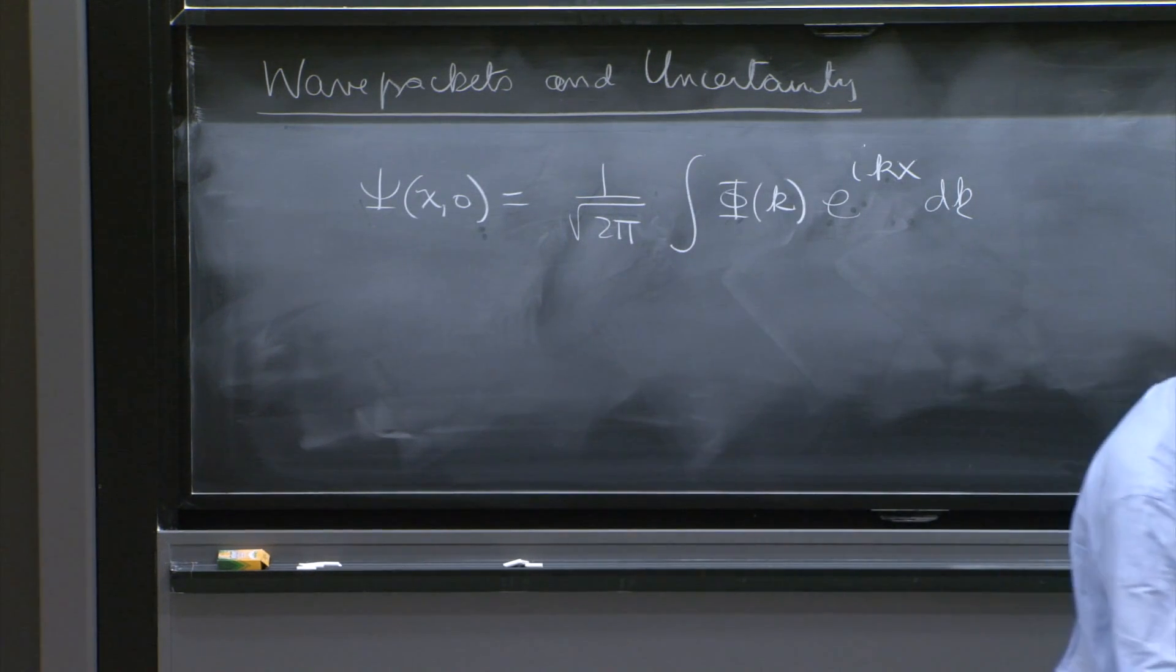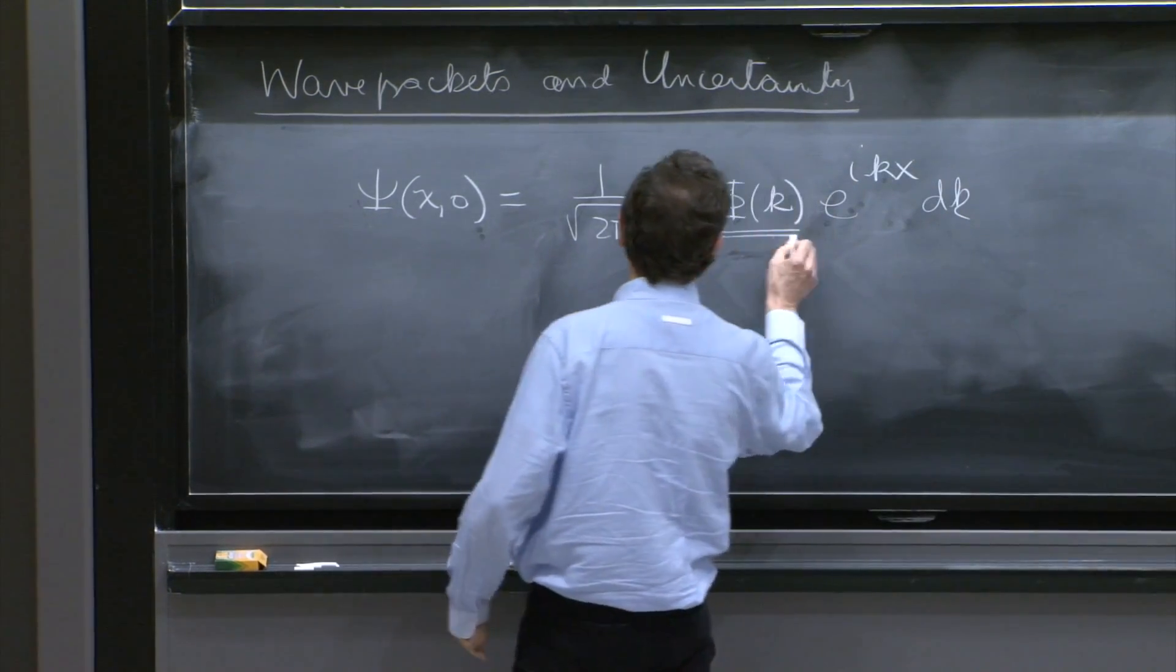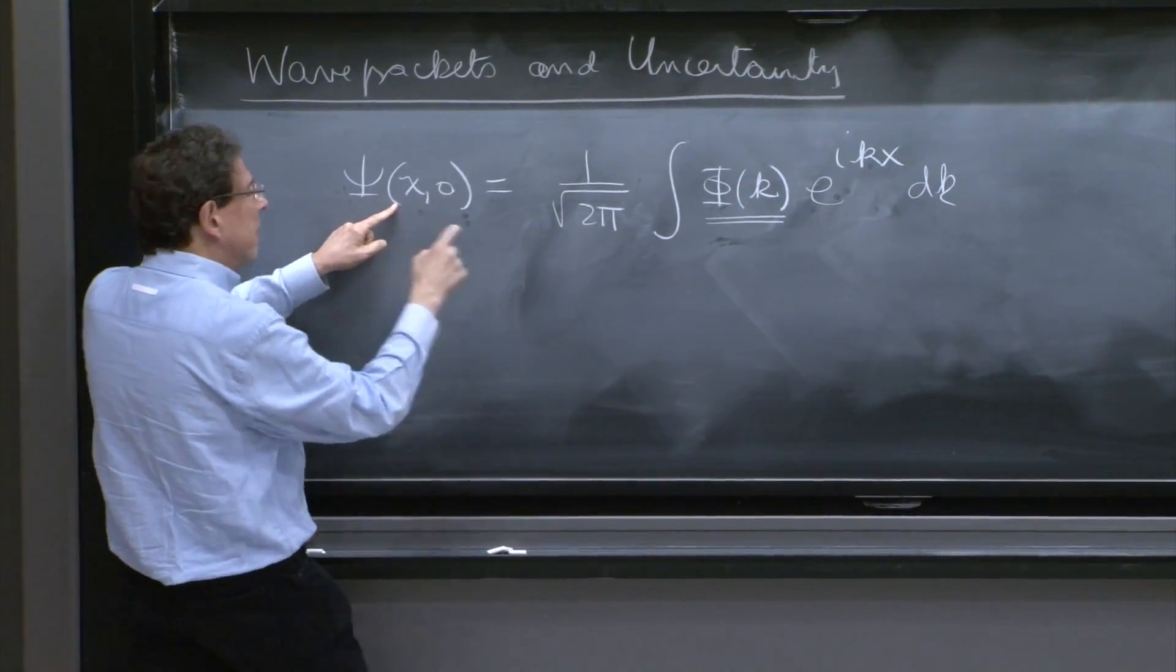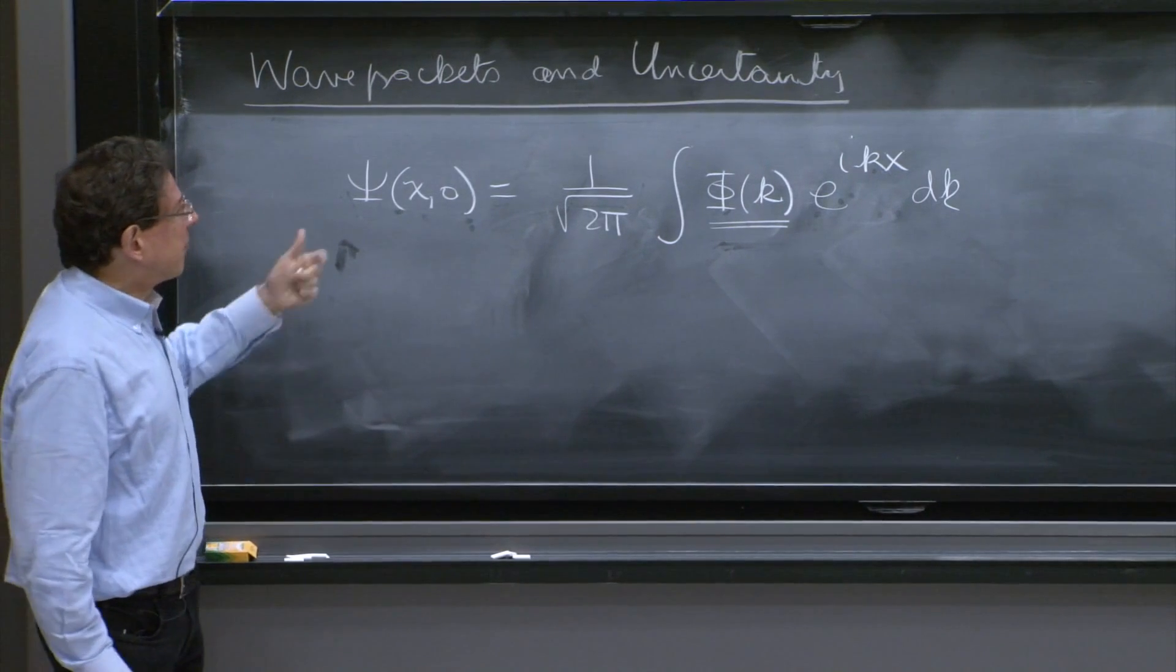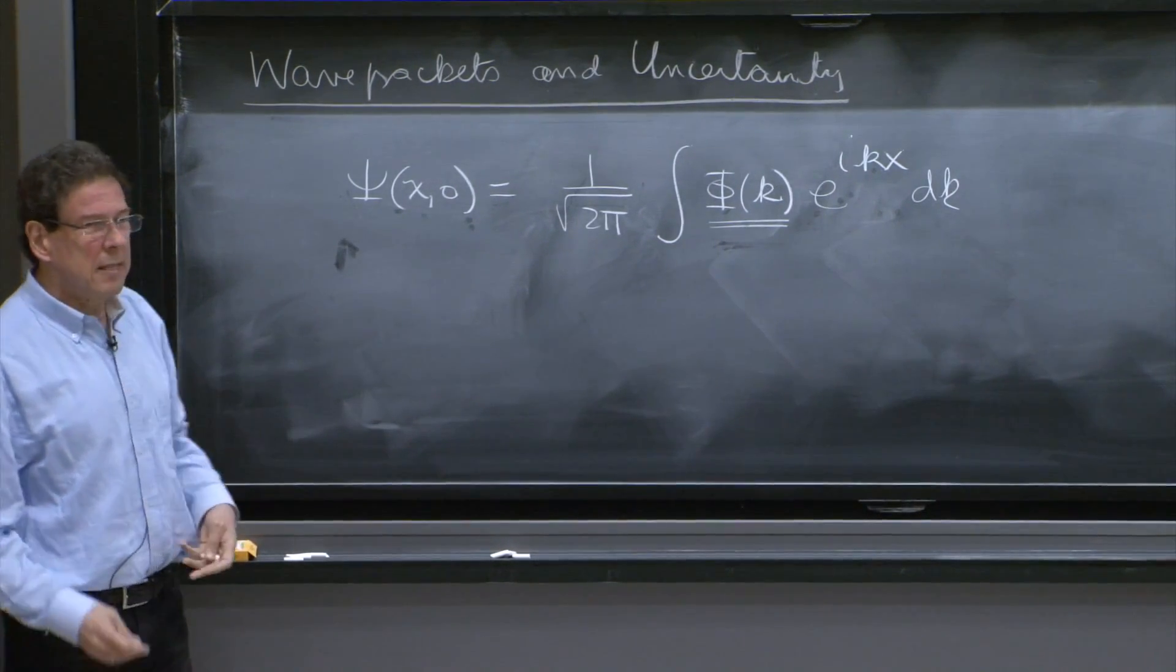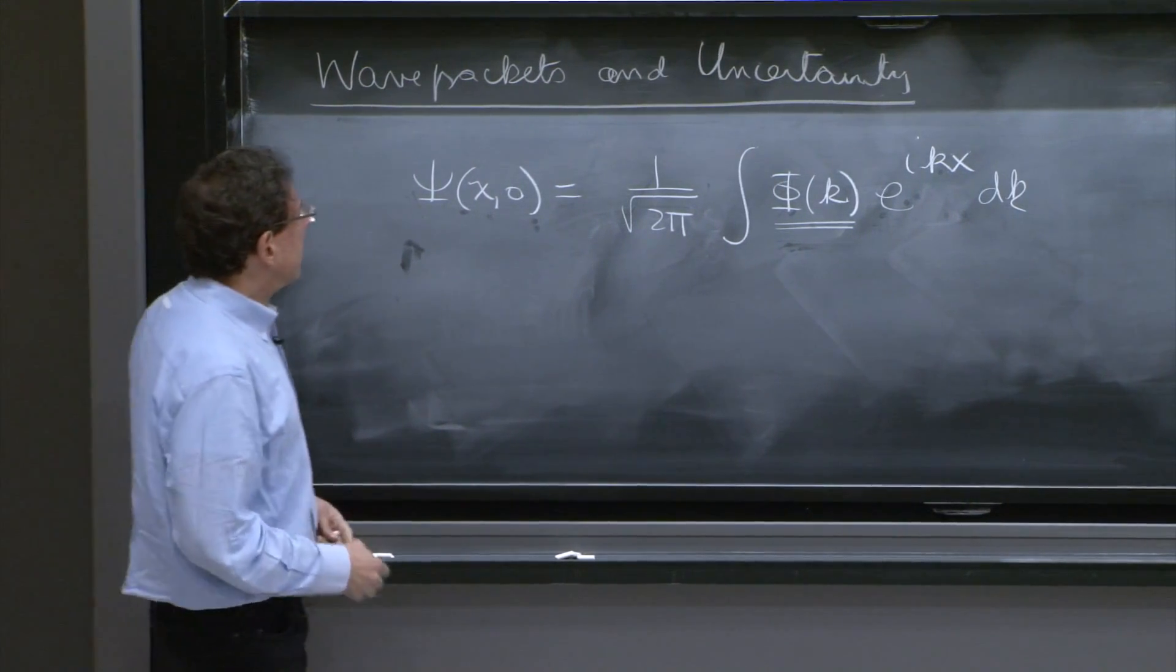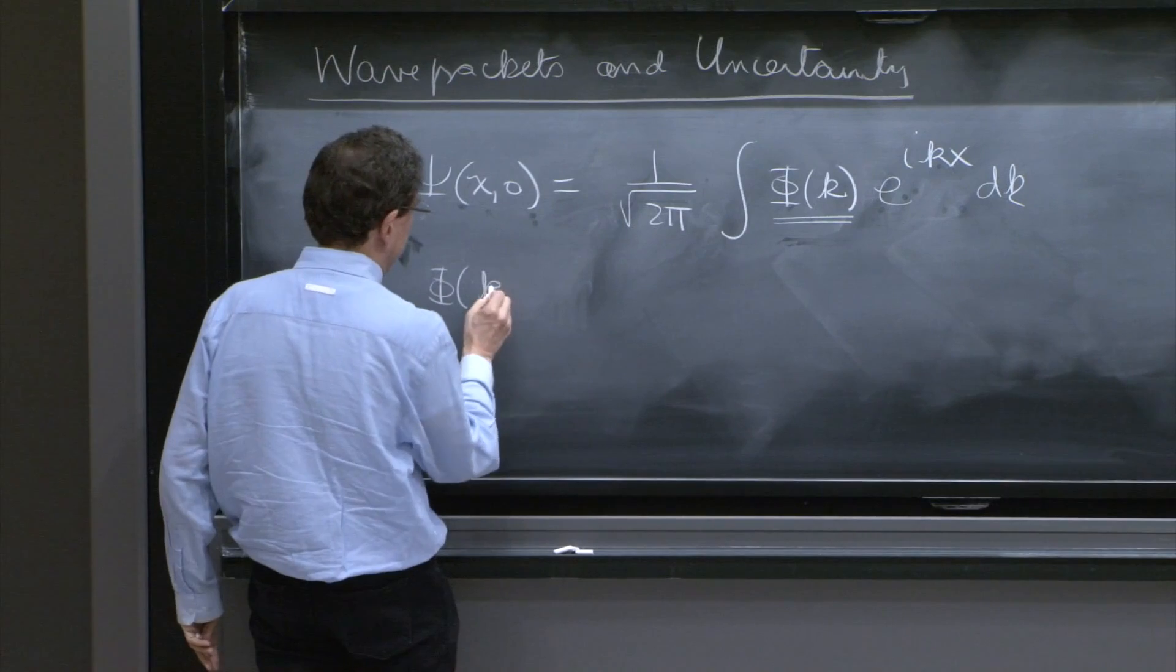But this φ of k, however, suppose you know this wave function at time equals 0. φ of k is then calculable. φ of k can be determined, and that's the foundation of what's called Fourier's theorem that gives you a formula for φ of k.